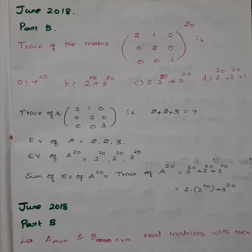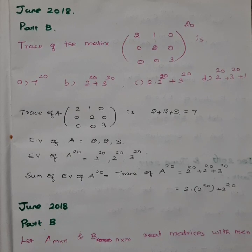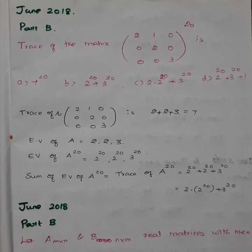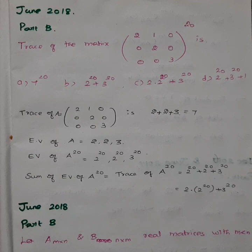We have to raise the matrix to the power 20, so we multiply the trace accordingly. This is a triangular matrix — upper triangle or lower triangle — and also a diagonal matrix. For a triangular or diagonal matrix, the eigenvalues are the main diagonal entries.